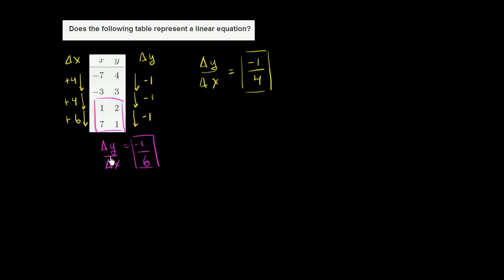Because we had a different rate of change of y with respect to x, or ratio between our change in y and change in x, this is not a linear equation. No, not a linear equation.